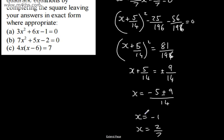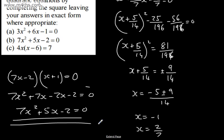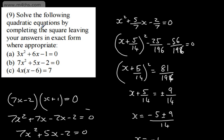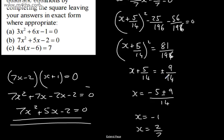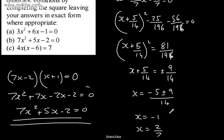Since we got nice answers, this one does factor: (7x-2)(x+1)=0, confirming x=2/7 or x=-1. We can also verify by substituting each solution back into 7x²+5x-2: both give 0, confirming the solutions are valid. Though completing the square requires careful mental arithmetic, the method is consistent.